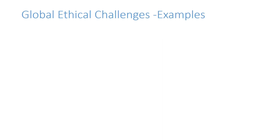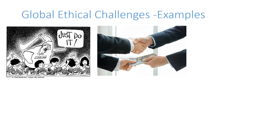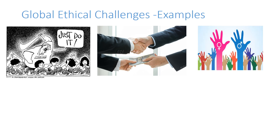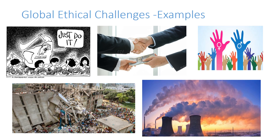This slide shows some illustrations of global ethical challenges. The Nike case involved child labour and significantly affected their reputation. We also see cases of corruption, the issue of gender equality, the Rana Plaza building collapse — which occurred because health and safety norms were not respected — and examples showing how pollution is a serious problem.